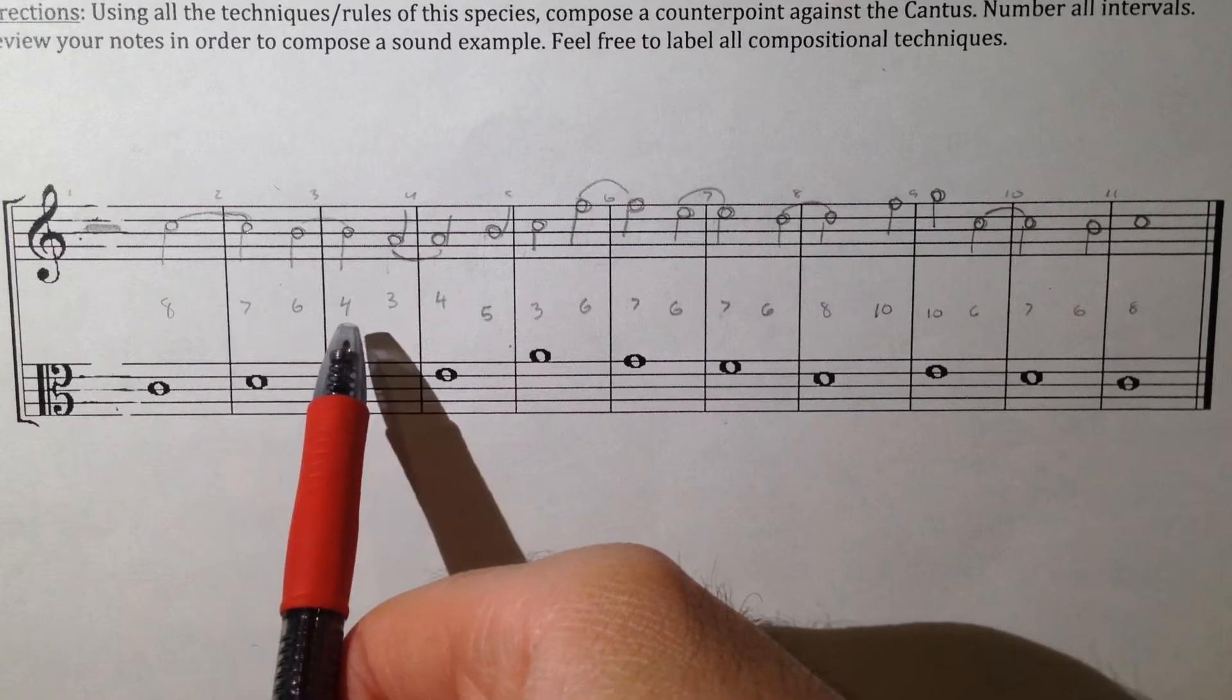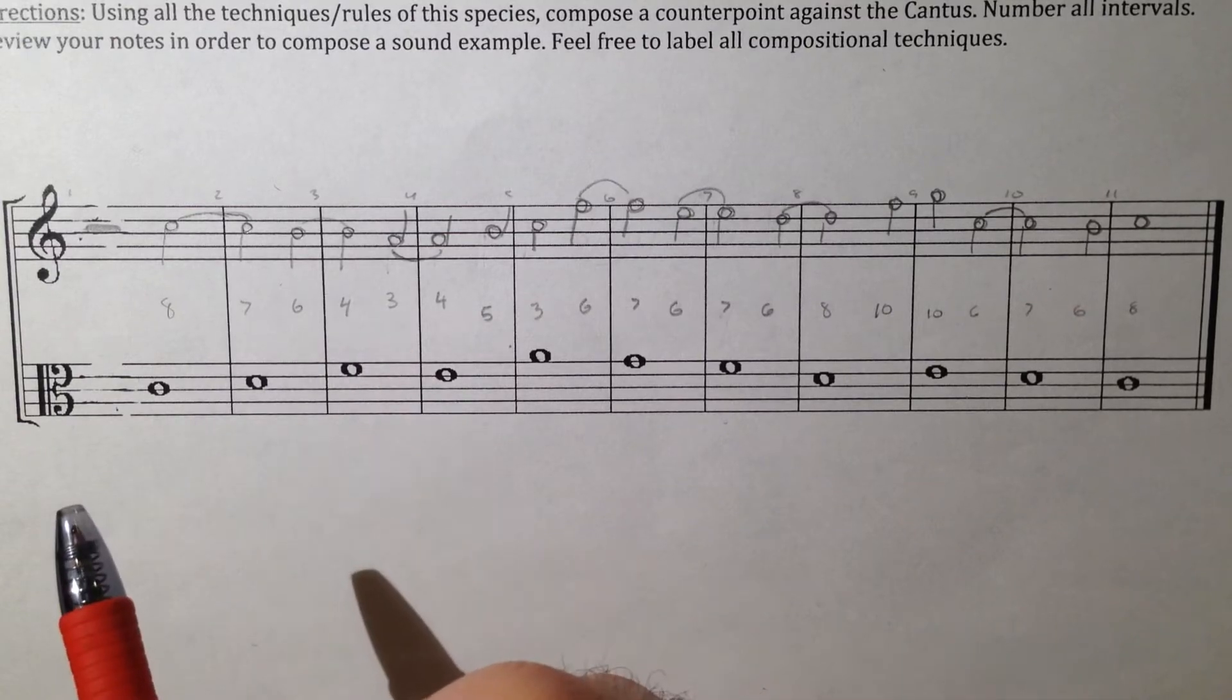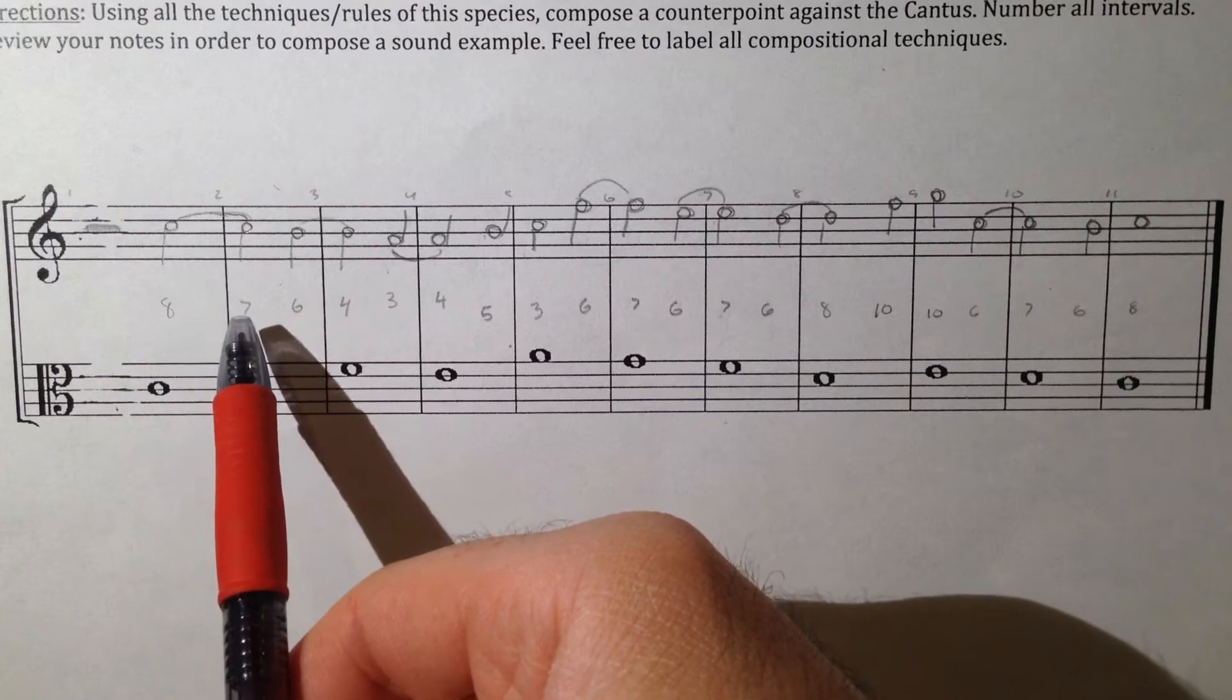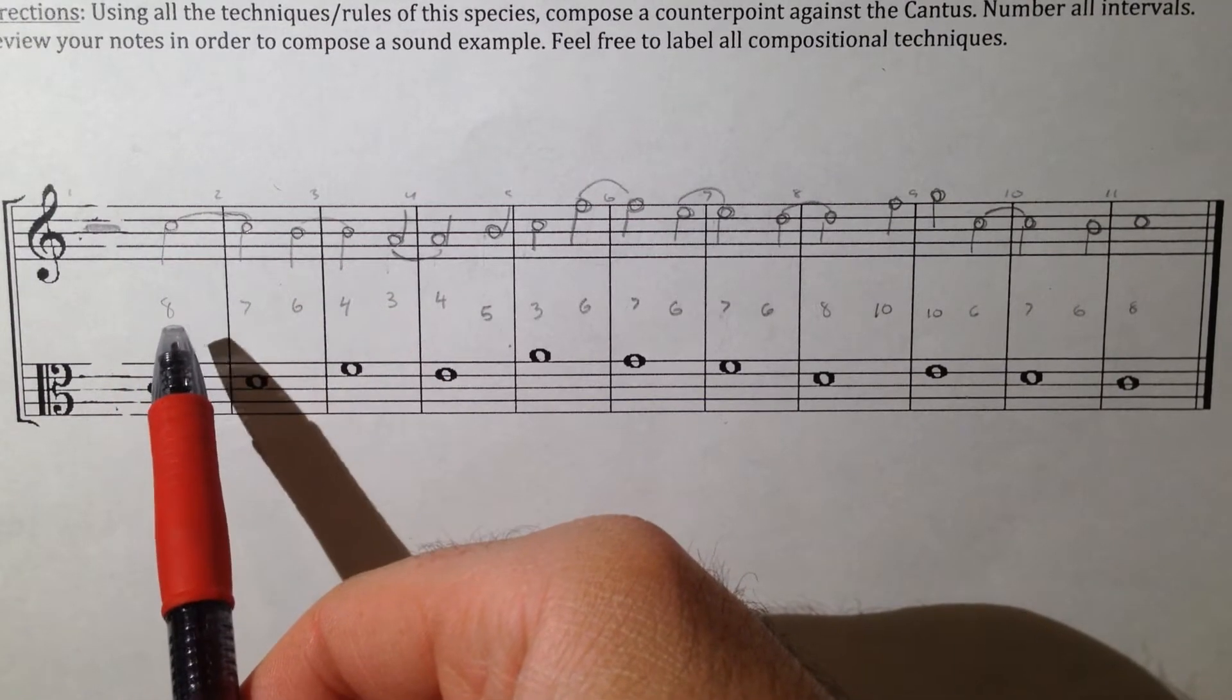Dissonance meaning a 7, a 4, a 2, or a 9. So they're put on a downbeat via suspension, so they're tied over the bar line.